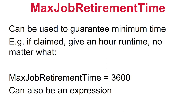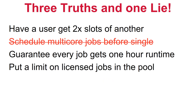There is an additional StartD knob, max_job_retirement_time, which overrides preemption. This allows an admin to say that no matter what, don't preempt a job for at least this amount of time. It's commonly used when preemption is enabled to guarantee some minimum runtime. For example, every job that lands here cannot be preempted for the first hour of their runtime. This can also be an expression — so you could say jobs from a certain submitter get 10 hours, everyone else gets one hour.